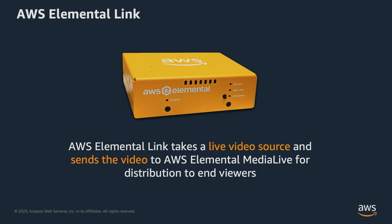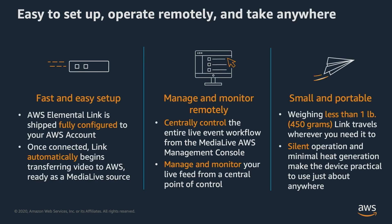Link takes a live video source and sends the video to AWS Elemental MediaLive for distribution to end customers. It's fast and easy to set up. AWS Elemental Link is shipped fully configured to your AWS account. Once connected, Link automatically begins transferring videos and thumbnails to MediaLive. You can manage and monitor multiple devices remotely with centralized control within MediaLive.